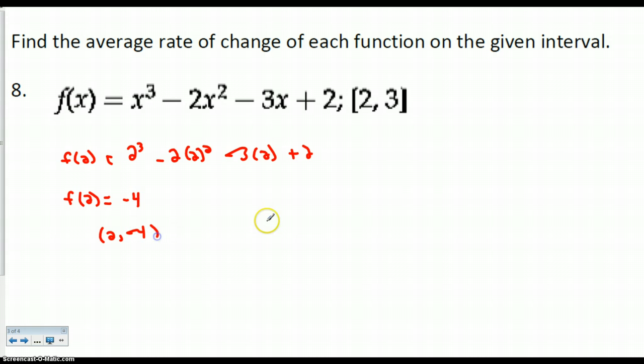So what I want to do then is plug 3 in. So I'm going to find what f of 3 is. So I do 3 cubed minus 2 times 3 squared minus 3 times 3 plus 2. And when I check to see what f of 3 equals, it equals positive 2. So I have the ordered pair 3, 2.